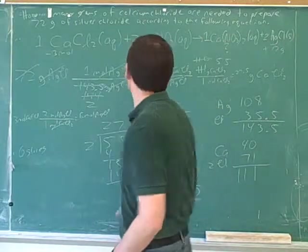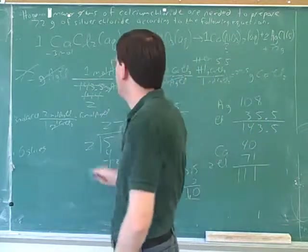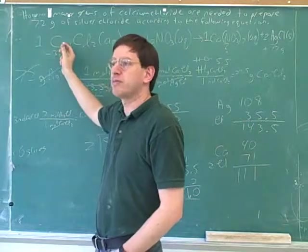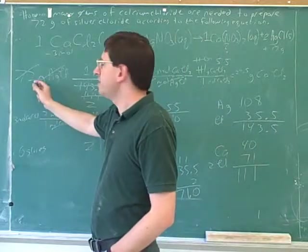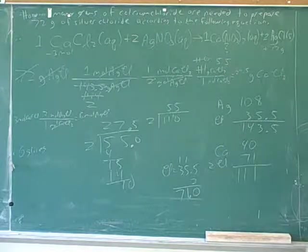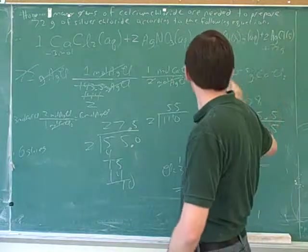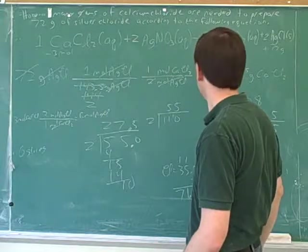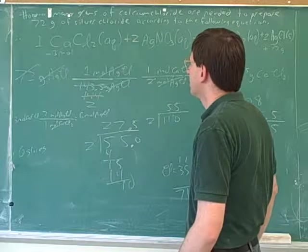Coming back to the basic intuition: the stoichiometric coefficients tell us we're going to be making twice as many moles of silver chloride as we're using up of calcium chloride. But was that true for the grams? We used up 72 grams of silver chloride — did we make twice as many grams of calcium chloride? In fact, we made fewer grams. How is it possible that this could be twice as many moles but fewer grams?